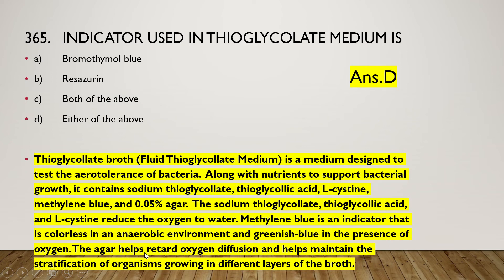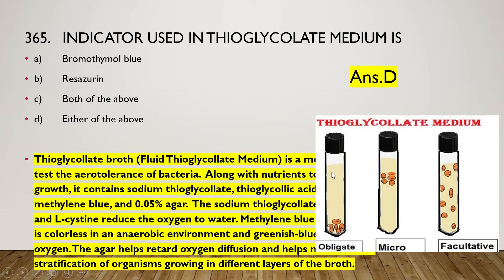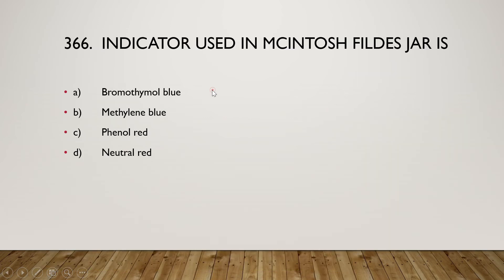Sodium thioglycolate, thioglycolic acid, and L-cysteine reduce oxygen to water. Methylene blue is an indicator that is colorless in anaerobic environments and greenish blue in the presence of oxygen. Agar helps retard oxygen diffusion and maintains stratification of organisms growing in different layers: aerobic organisms grow at the top, obligate anaerobes at the bottom, microaerophilic organisms in the middle, and facultative organisms throughout.